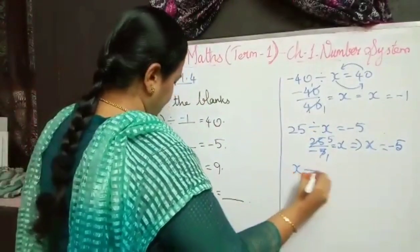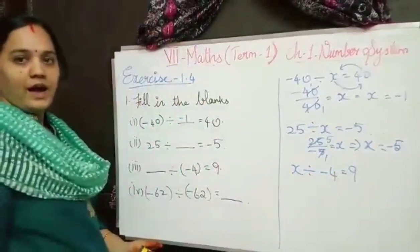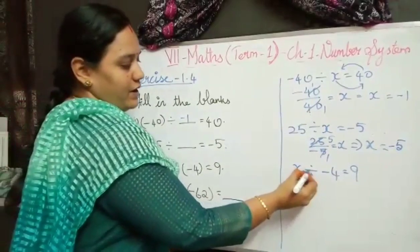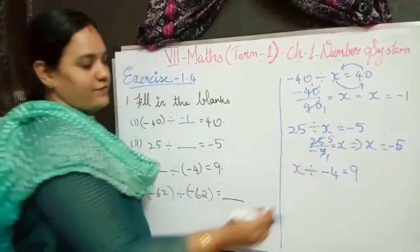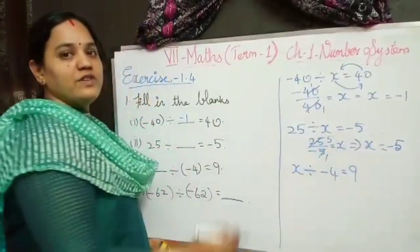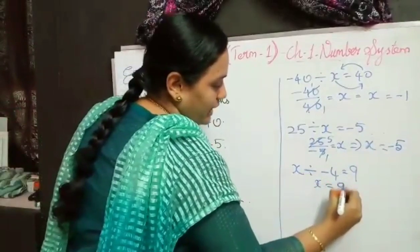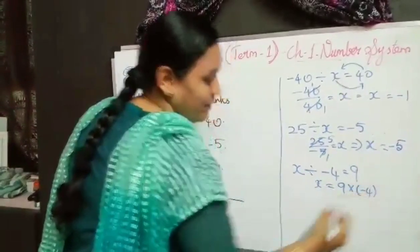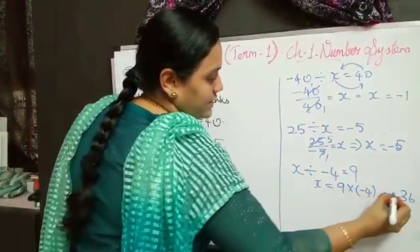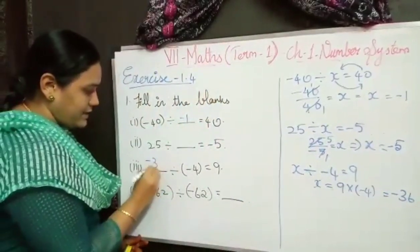Here we use the method that when bringing a number to the other side, division changes to multiplication. So x equals 9 times minus 4. 9 fours are 36, different sign so minus. My answer is minus 36.